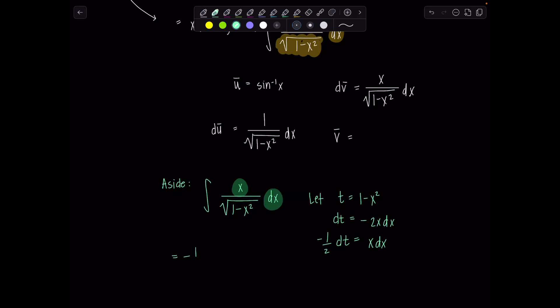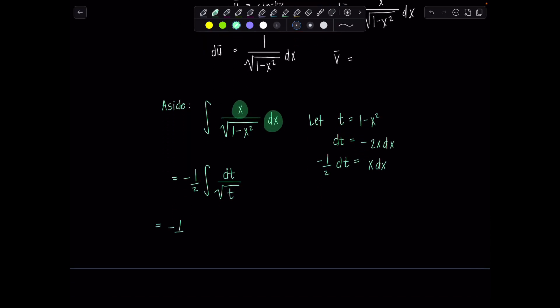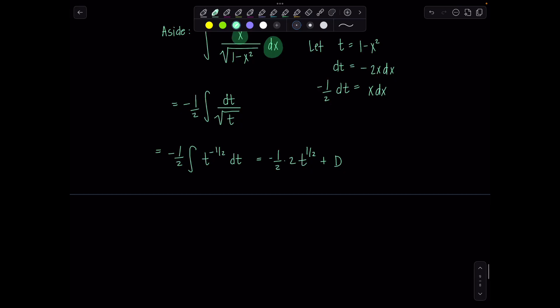And now I can write this as negative one half integral dt over square root of t. Are we all right? Okay good. And then now to find the antiderivative this is negative one half integral t to the negative one half dt. Add one to the exponent. It'll be t to the positive one half. Divide by the new exponent. I multiply by two and then we'll put plus c. But you know what I want to save c for the grand finale. So I'll say plus d. So this ends up being negative t to the one half or square root of t. And who was t? t was one minus x squared plus d.